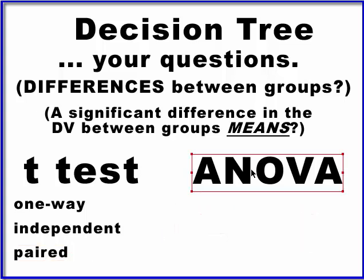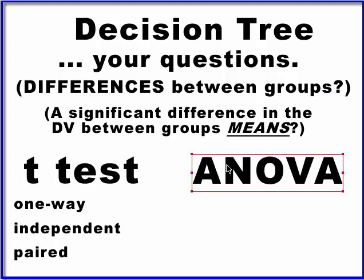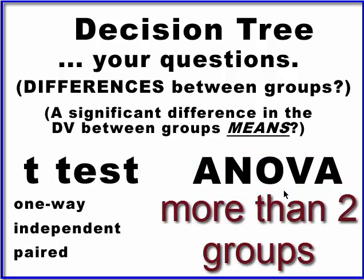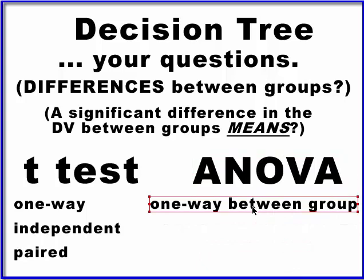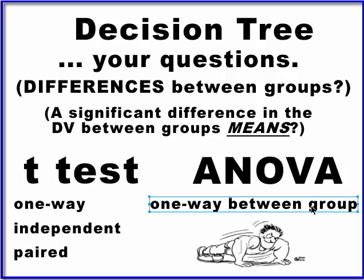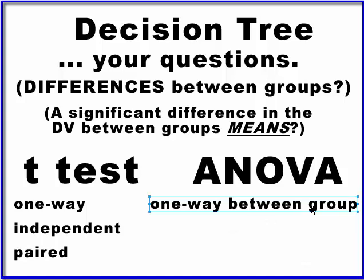ANOVA stands for analysis of variance and has many forms. You use the ANOVA if there are more than two groups — three or more groups. The main one is the one-way between group test. A good example is who can do the most push-ups in an hour — that's the DV — between sailors, marines, soldiers, coast guards, and airmen. You have one IV called military branch with five levels, and the DV is the number of push-ups. That's a one-way between group ANOVA.